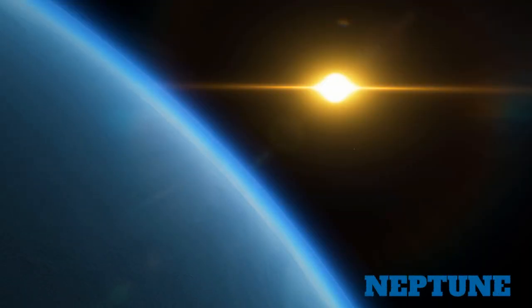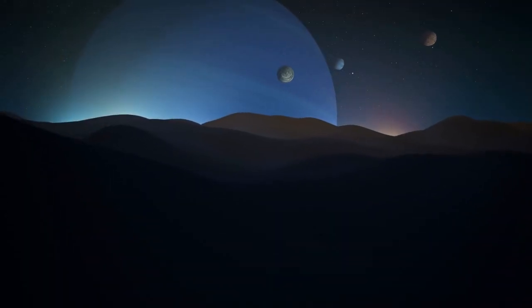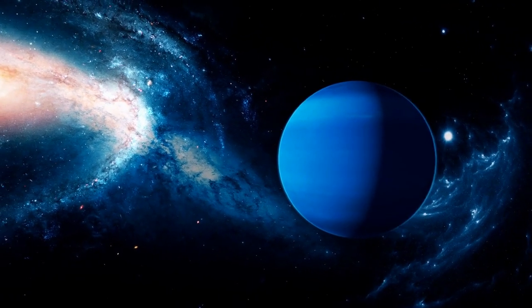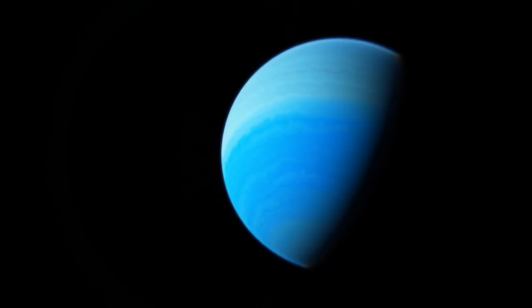Neptune is the eighth and furthest planet from the Sun. It has 16 moons. Too far from Earth to see with the naked eye, it was the first planet to be discovered using mathematical calculations.